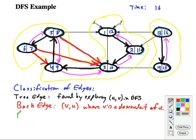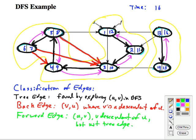The next classification will be forward edges. This is where we have U, V. V is a descendant of U, but not a tree edge. Under some other ordering of the neighbors, this could have been a tree edge. So an example of that here would be this one. And by the way, I missed another back edge right here.